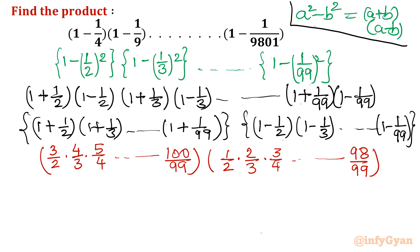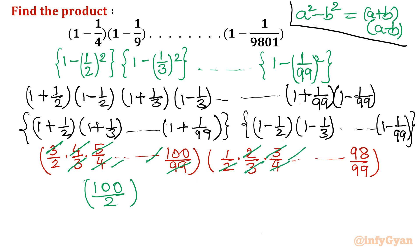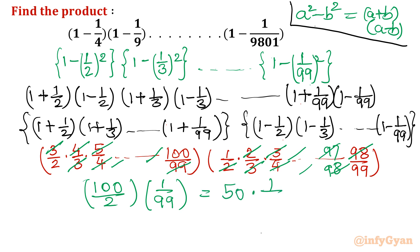After the telescoping cancellation, the first bracket gives 100/2, which equals 50, and the second bracket gives 1/99. Multiplying these together: 50 times 1/99 gives our final answer of 50/99.